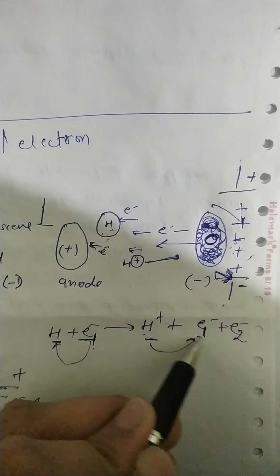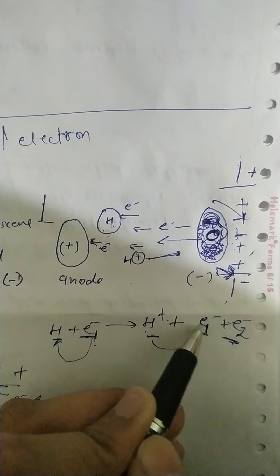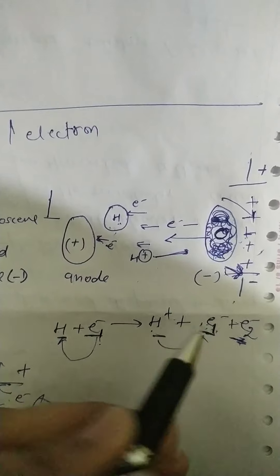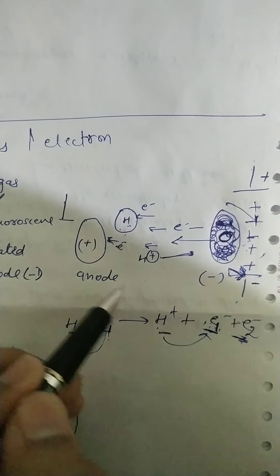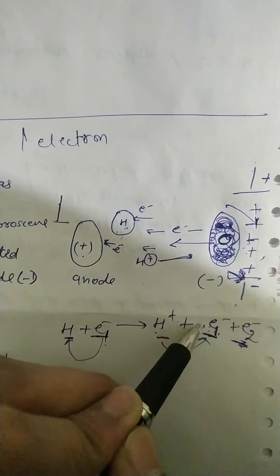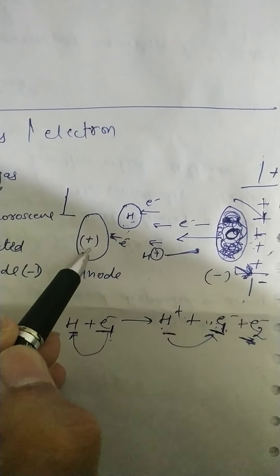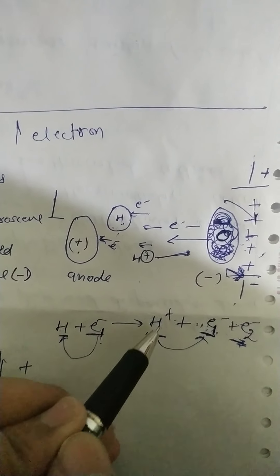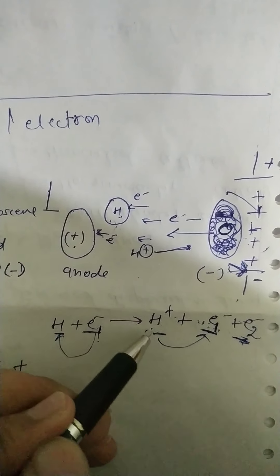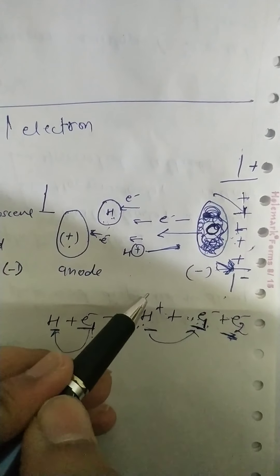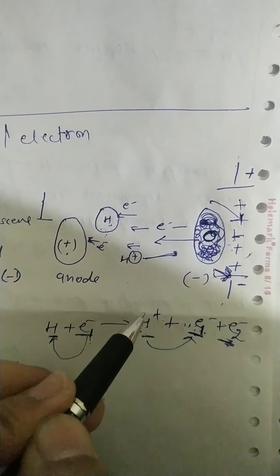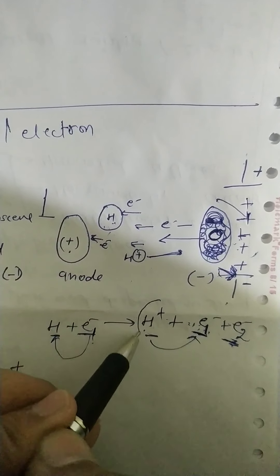So these negative particles — electrons carry negative charge — they move towards the anode because negatives are attracted by the positive. These electrons move towards the anode, and the hydrogen H⁺ has a positive charge, so it moves towards the cathode because the cathode has a negative charge — opposites attract.